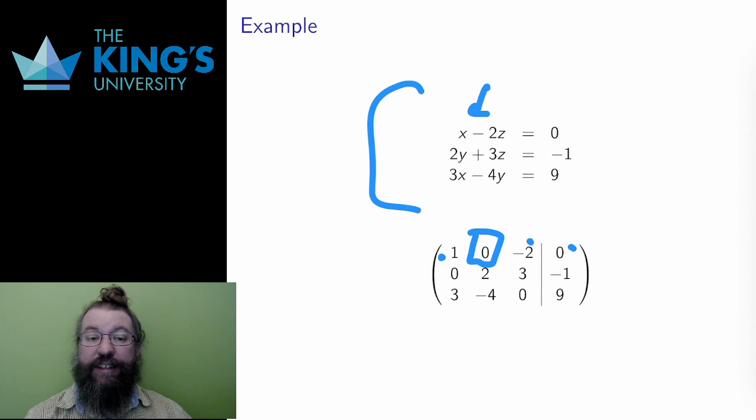The second row is missing x, so when I transfer the constants, I write 0 in the x spot. And the third row is missing z, so when I transfer the constants, I write 0 in the z spot.